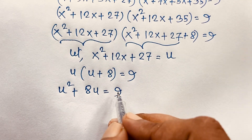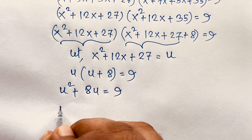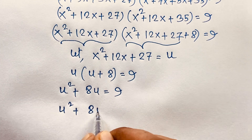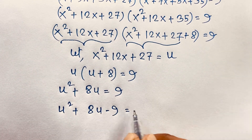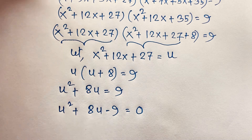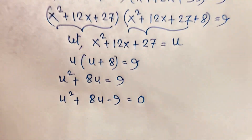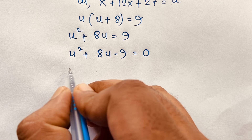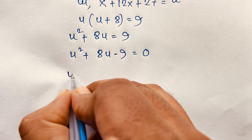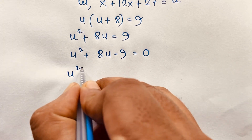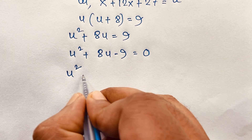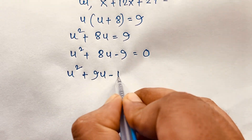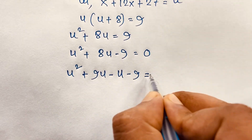Moving 9 to the left side gives us u² + 8u − 9 = 0. So we have found a nice quadratic equation. I apply the middle-term factoring: u² + 9u − u − 9 = 0.